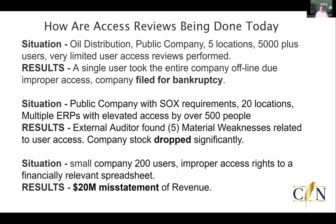The first situation was a pretty good-size oil and gas distribution company. They had five locations, 5,000 employees, and they had a real problem with user access — too much access performed by a single user. That particular user had the ability to do things they shouldn't be able to do within a couple of their highly risky environments. That user actually created a situation that caused the company to file for bankruptcy. Five thousand people lost their jobs — it was a pretty disastrous situation.